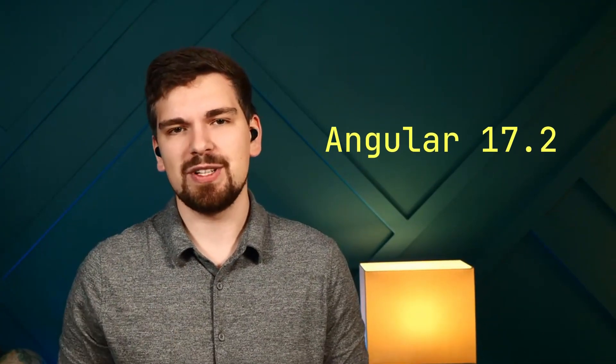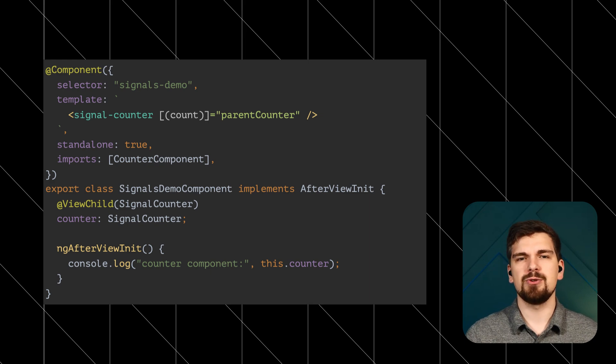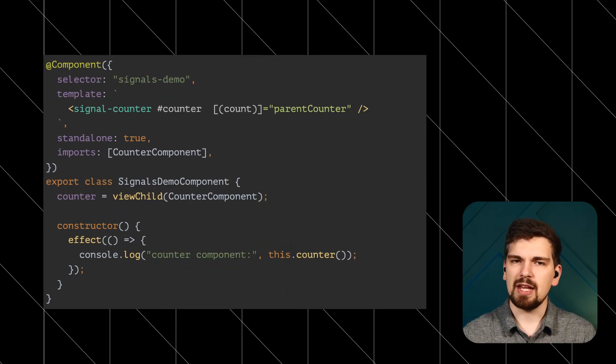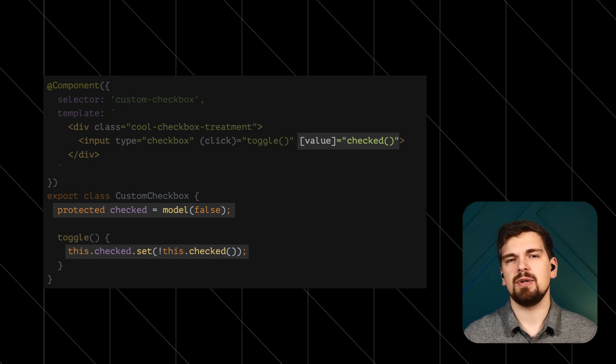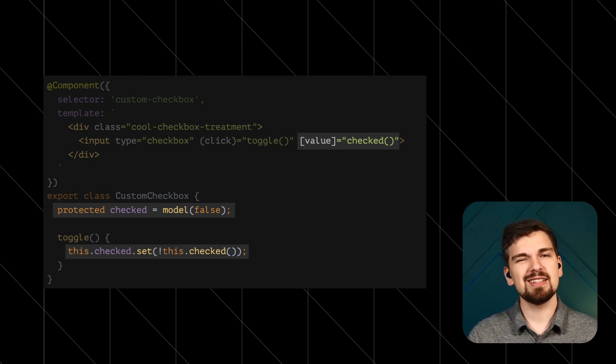Another month, another Angular release. Version 17.2 brings several nice improvements and moves us another step closer to signal-based components. We have replacements for ViewChild and QueryChildren with a new signal-based query API, and with the new model input, we also have a signal-based two-way data binding approach. There are also improvements to the Angular dev tools making it easier to debug hydration mismatch issues, improvements to the ng-optimized image directive with a new placeholder attribute that blurs the image until it's fully loaded, and support for Bun's package manager and custom PostCSS configuration in the application builder.